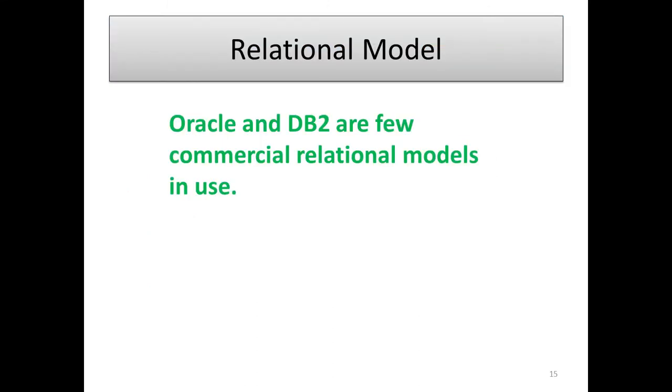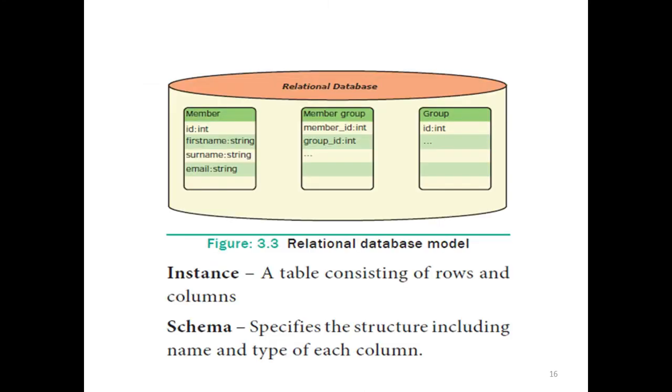The next one, relational model. The relational model, we simply say hierarchical and network too. It means simply database. There are few commercial relational models in use. You see, the member, member group, group like this. Here, we say instance. What is instance? A table consisting of the row and column, simply row and column. If you take a table in our class, it contains row and column. Here, we define as instance schema.